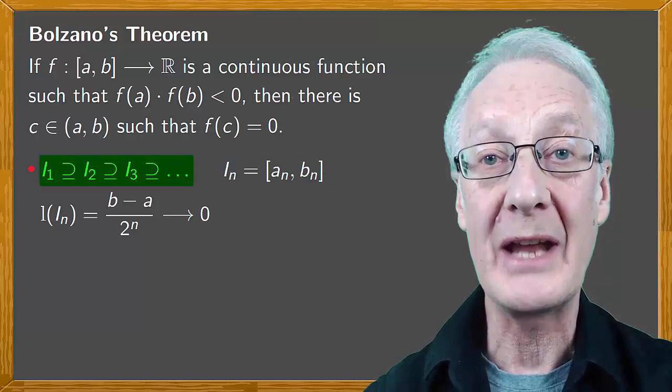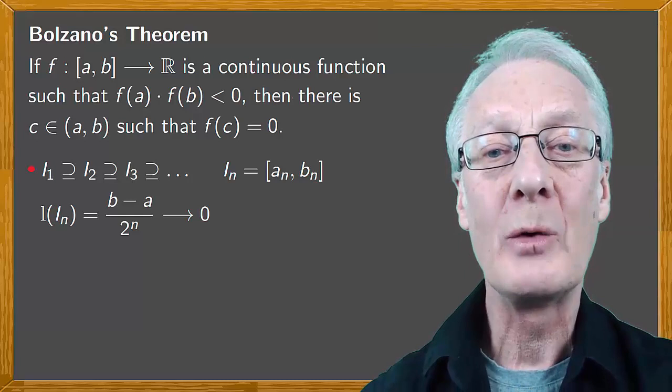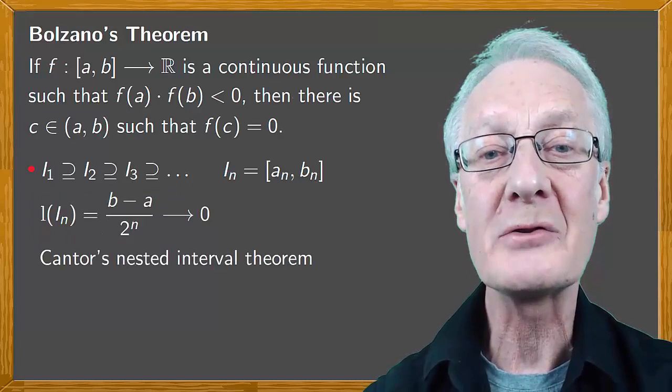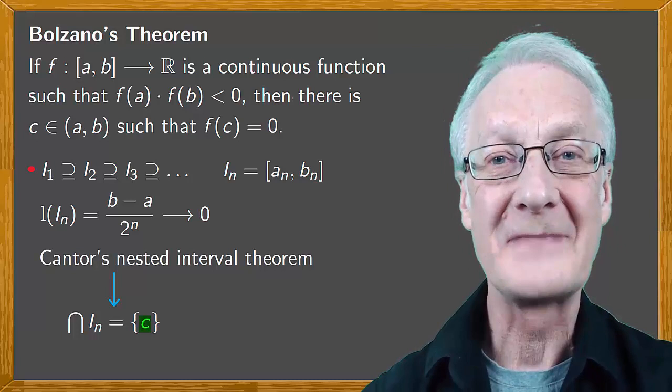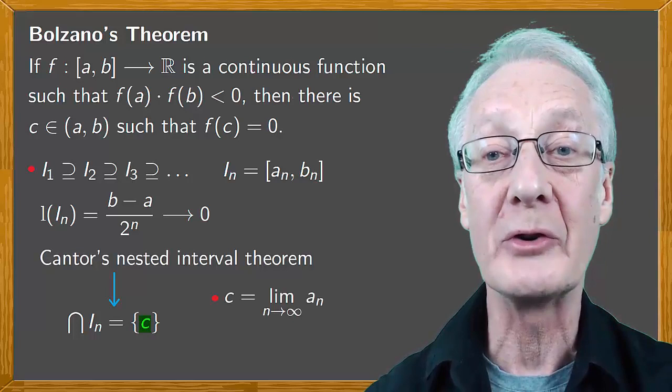What happens as the length limit tends to 0? Cantor's nested interval theorem says that the intersection of all these intervals is a point, the set containing the single value c. This c will be the limit of the sequence formed by the left ends of the intervals and also the limit formed by the right ends if these intervals converge on c from both sides.